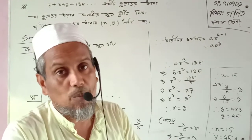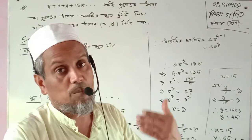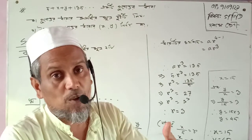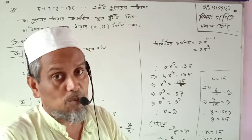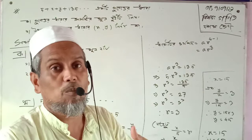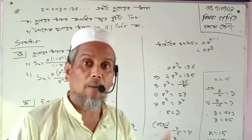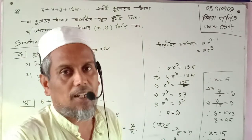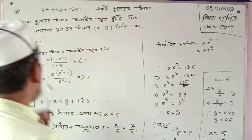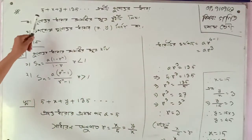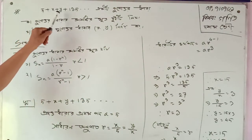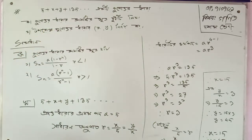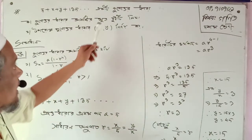Take a look. Each line is 1, so it is the first line. See, this is the line. 5 plus X plus Y plus 1, 3, 5. 5, 6, 6, Y, 6. That is the line.